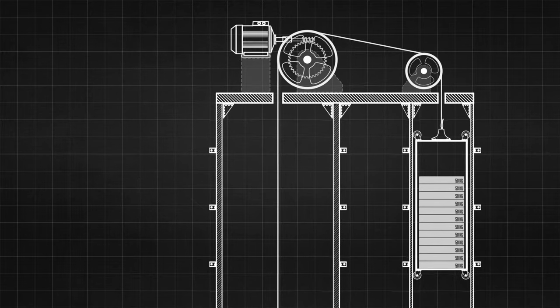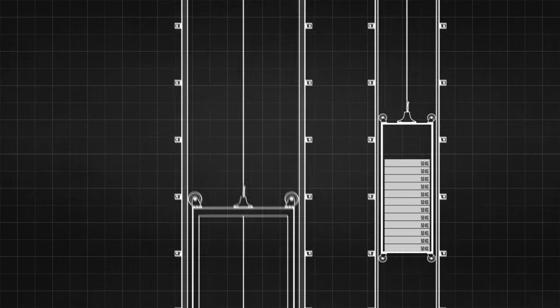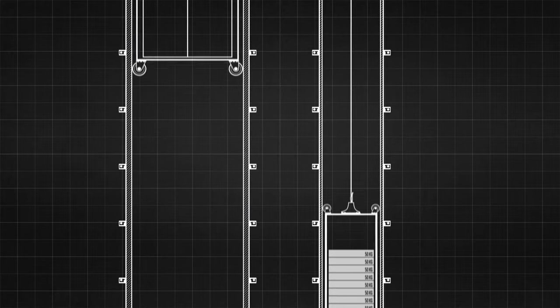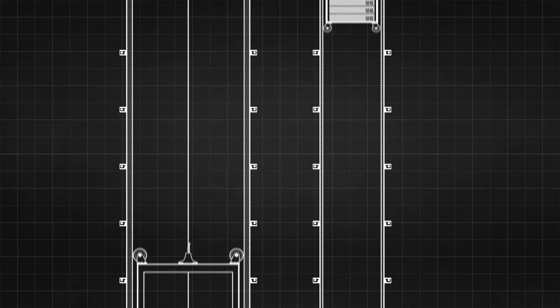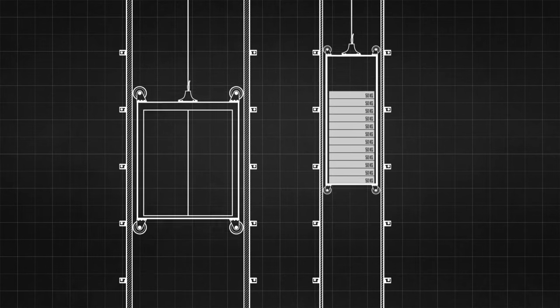The counterweight travels along vertical guide rails opposite to the direction of the elevator car. This component may appear to do nothing more than just rising and descending, but it in fact plays a very crucial role in the stability and energy efficiency of an elevator.